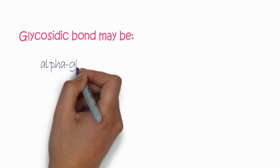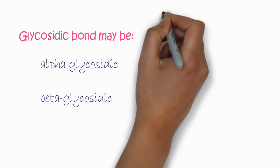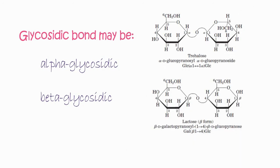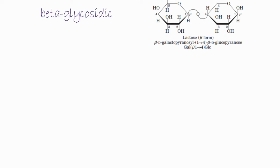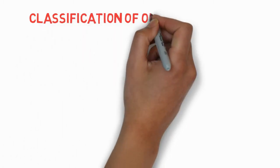The glycosidic bond may also be classified into alpha-glycosidic bond and beta-glycosidic bond. In the alpha-glycosidic bond, the hydroxyl group at the anomeric carbon is below the plane — this is the alpha configuration. When the hydroxyl group is above the plane, it is the beta-glycosidic bond.